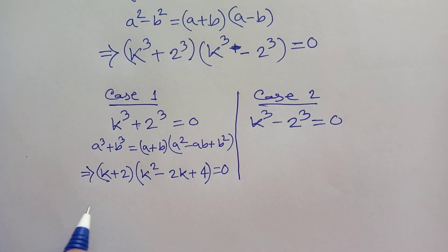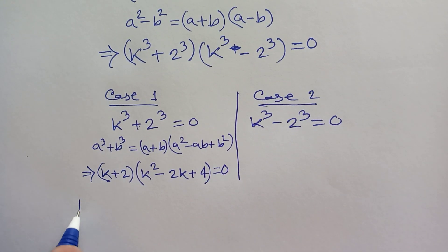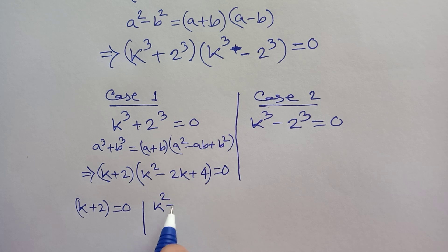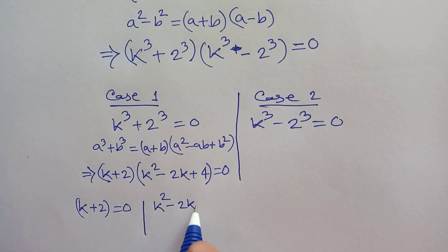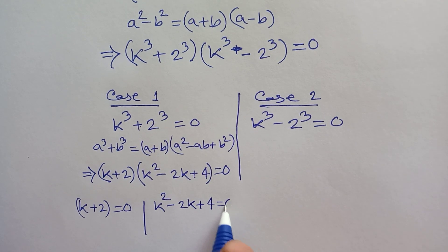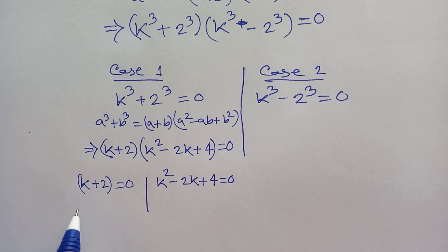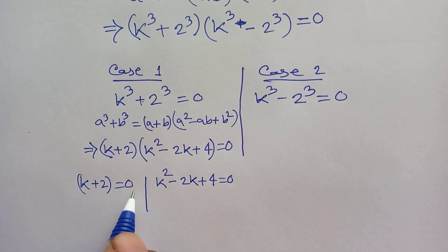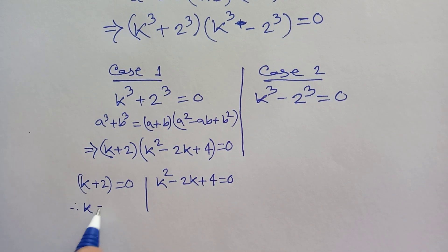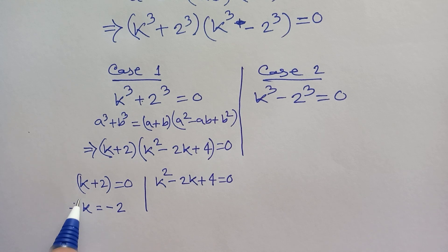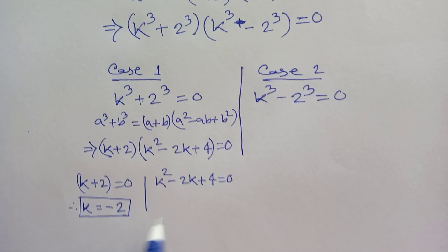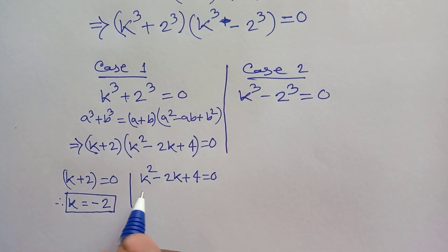This gives us k plus 2 is equal to 0, or k squared minus 2k plus 4 is equal to 0. In the first part, moving 2 to the right side gives k is equal to minus 2. This is the first value of this equation.